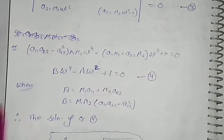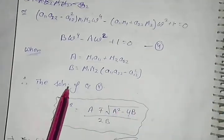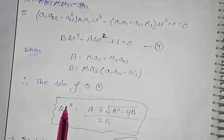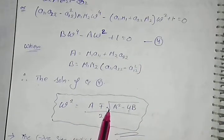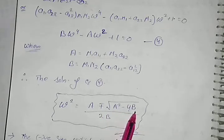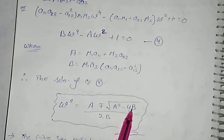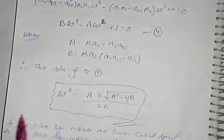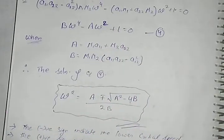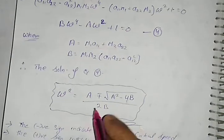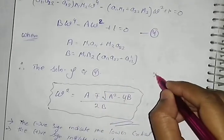Thus the solution of equation 4: omega^2 is equal to A plus minus root of A^2 - 4B divided by 2B, because the coefficient here is B and C is 1. This is the quadratic equation of omega^2. Therefore the value of omega^2 will be this.